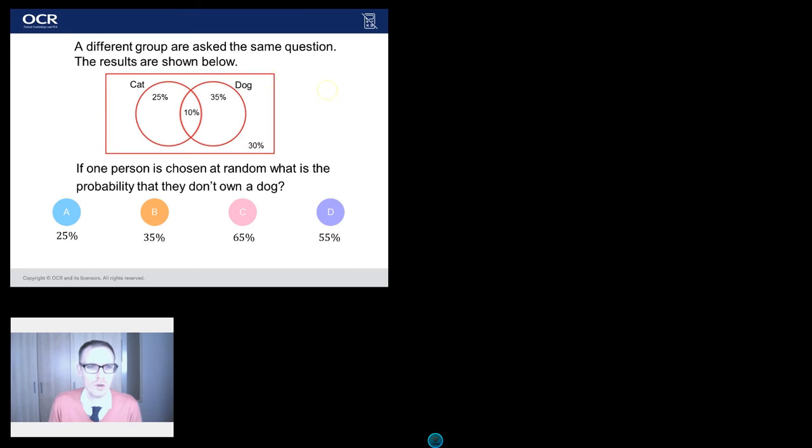So I'm hopefully going to help guide you through the process of picking the correct region on this question. So let's have a little read here. A different group, don't worry about that, it's just kind of part B. The results are shown below. OK, so here's our little Venn Diagram. If one person is chosen at random, what is the probability, and here's the important bit, they don't own a dog.